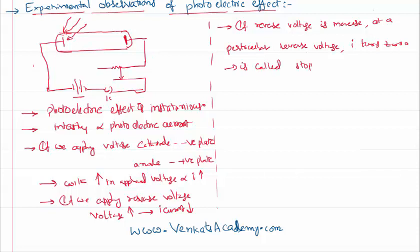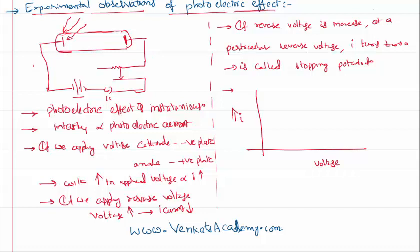If we draw a graph with applied voltage on the x-axis and photoelectric current on the y-axis, increasing voltage increases the photoelectric current until it reaches a maximum called saturation current. Beyond that, even if we increase the voltage, the photoelectric current does not increase. At a particular negative voltage — the stopping potential — the photoelectric current becomes zero.